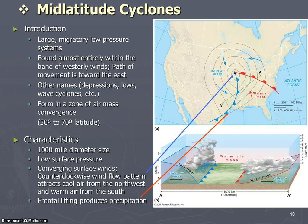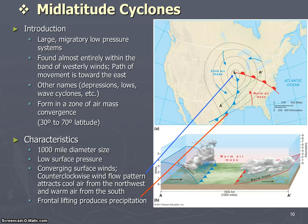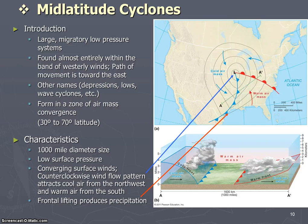So what is a mid-latitude cyclone? The mid-latitude cyclone is a migratory low-pressure system. Cyclone is simply another word for low pressure. It could also be called a depression or a wave cyclone.